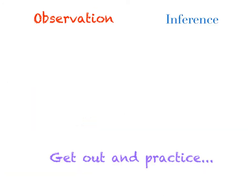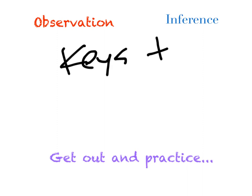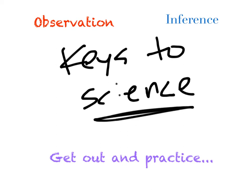Understanding observation and inference, along with knowing how to complete each, is a must in any scientific investigation. These two are keys to science. Got to feel comfortable with observation and inference. Get out there and observe the natural world with your five senses. Take what you currently know, apply it to what you're observing, and make inferences about that object, event, or thing. You can do it if you try.